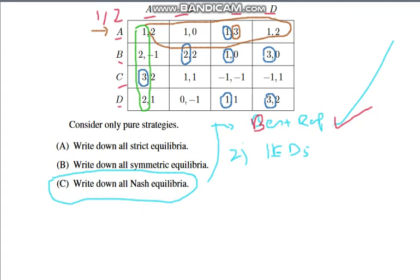When player 1 chooses A, player 2 will choose B since 2 is greater than 1, -1, and 1. Finally, when player 1 chooses D, player 2 will also choose the strategy B.